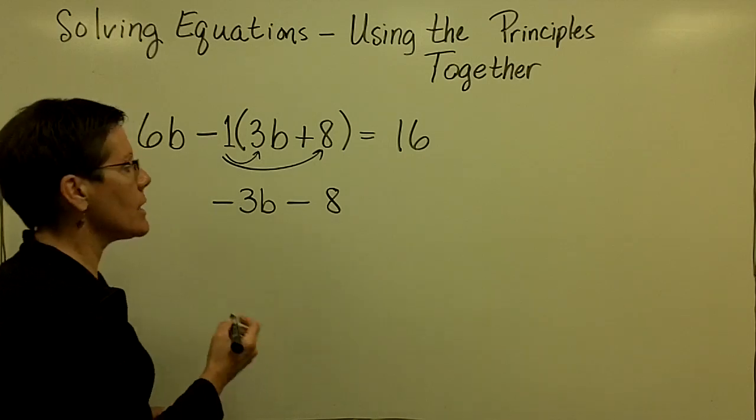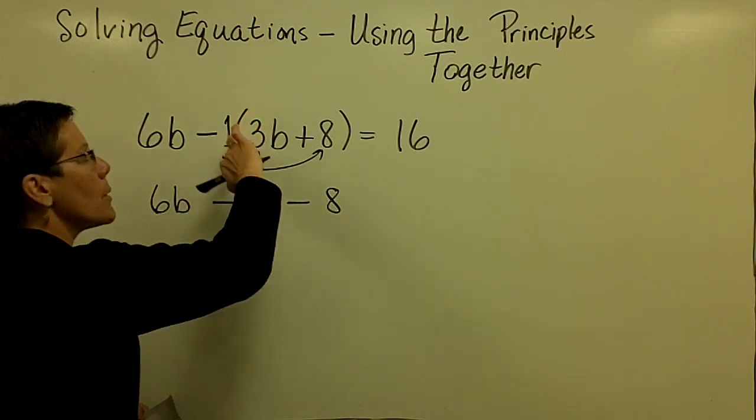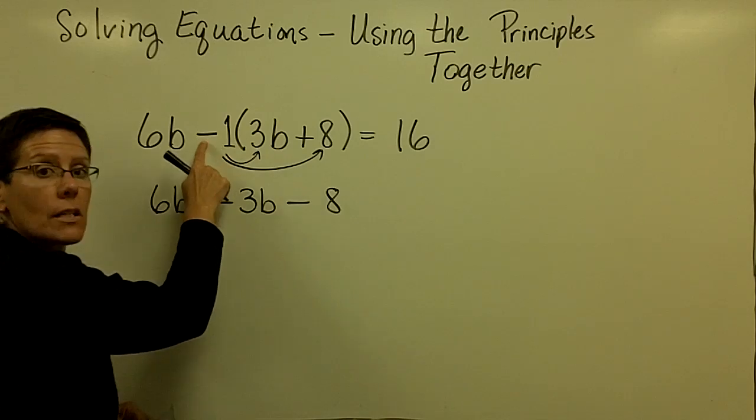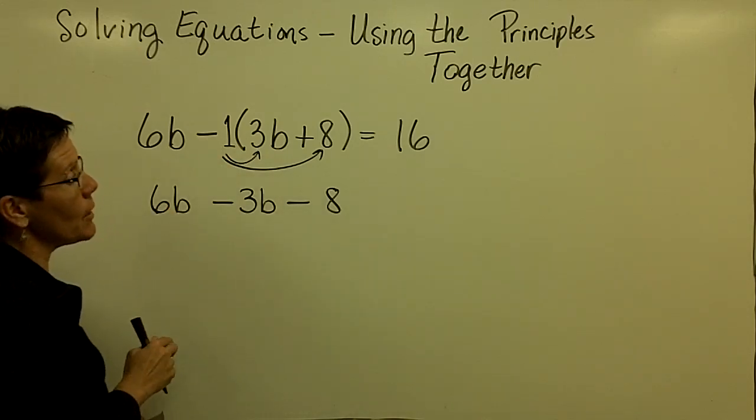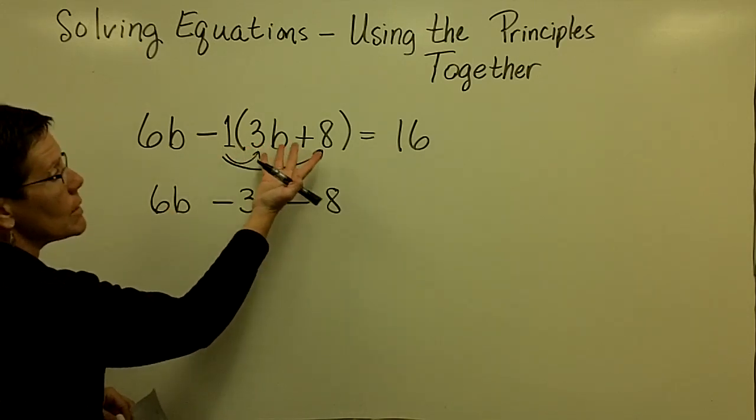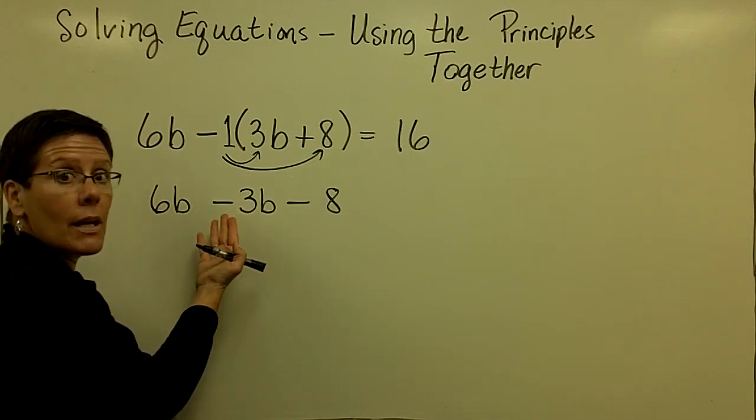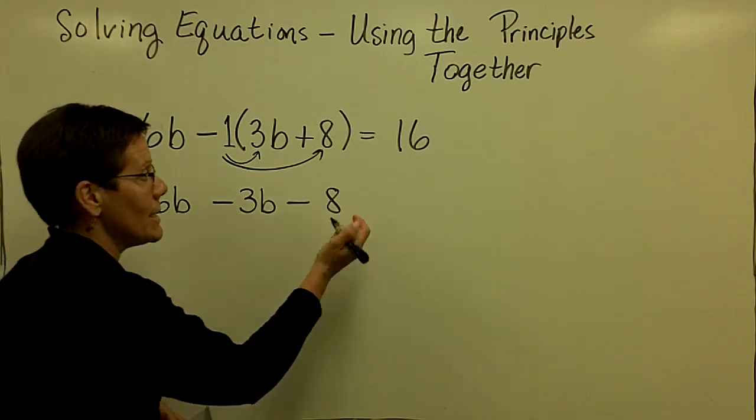And a negative 1 times a positive 8 is a negative 8, which is the same thing as minus 8. And you've gotten rid of the parentheses symbols because of the minus sign that was in front. So again, please notice it was 3B plus 8. It became a negative 3B minus 8.